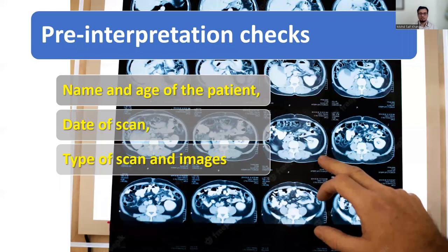Before you start CT scan interpretation, there are a few details to be checked on your CT film. These include the name, age, and sex of the patient, the date of the scan, the type of scan, and the images and views. Everything will be visible on the film or the console, and you must check these before you start reading the CT scan.